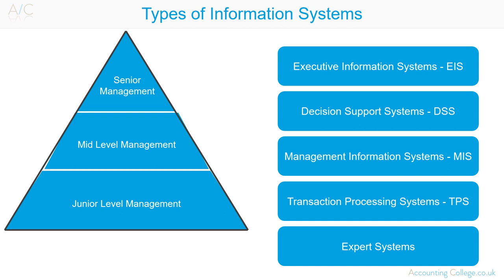Management information systems allow non-financial experts access to financial information. Management accounting data is useless by itself — it needs to be part of the wider information system so that it can be analysed and acted upon. Information systems reduce the time management has to spend gathering and processing routine information. Good decision making requires good management, and information systems can be used to aid in good decision making.